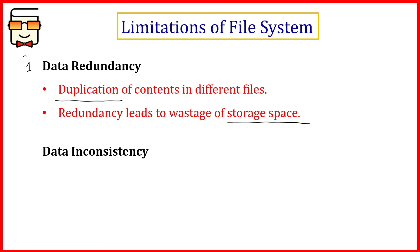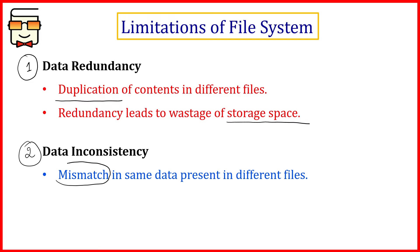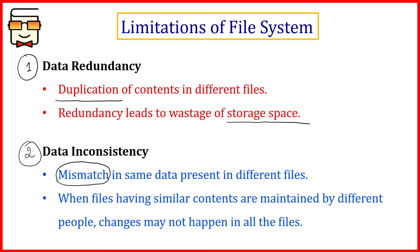The second limitation of the file system is data inconsistency. Data inconsistency happens when there is a mismatch in information — the same information has two different values in different files. For example, if the office staff stores the student's name and the class teacher also stores it, and the student changes his name, then if the office updates it but the class teacher does not, there will be a mismatch. This happens when similar contents are maintained by different people and one of them does not update the content. That is the cause of data inconsistency.